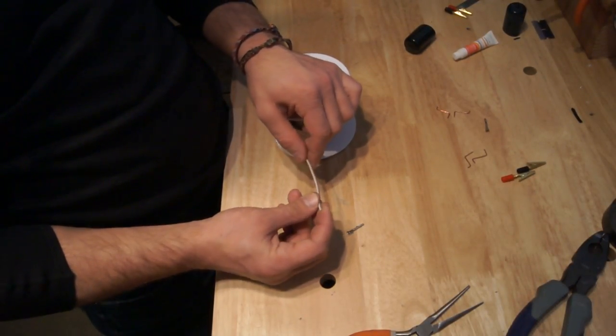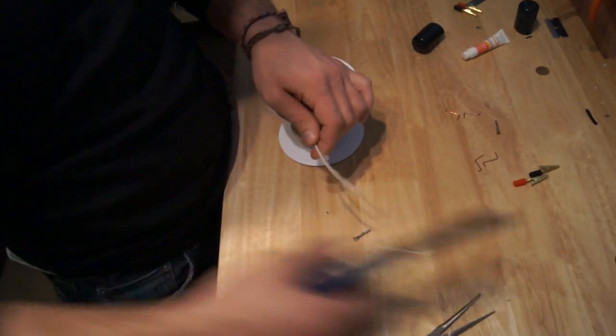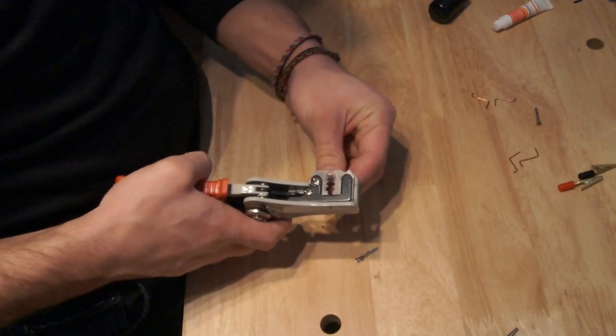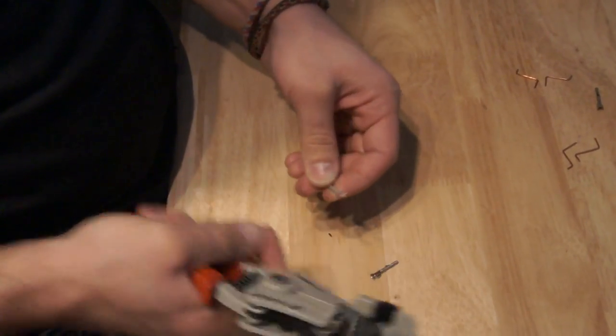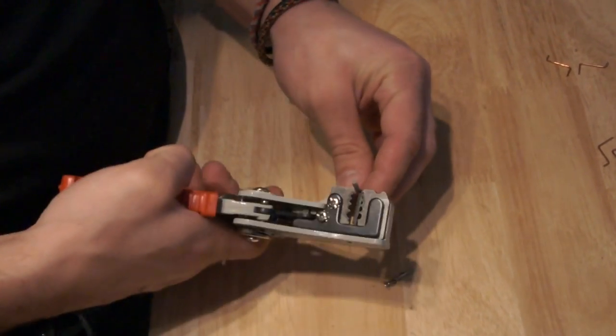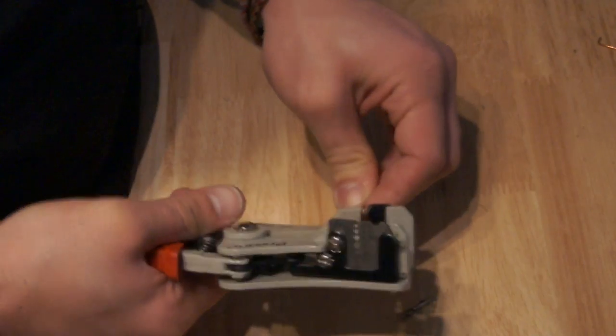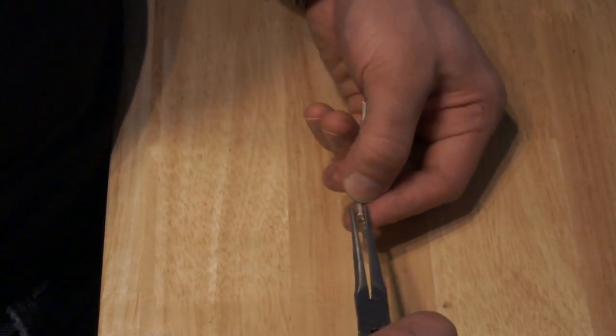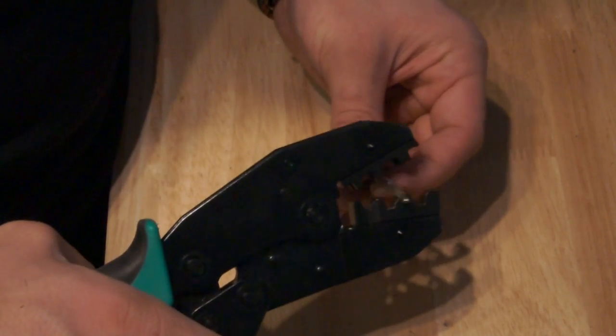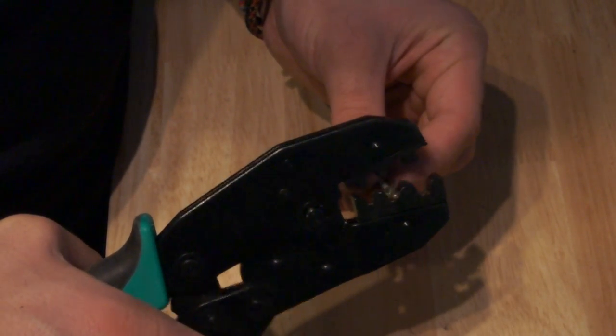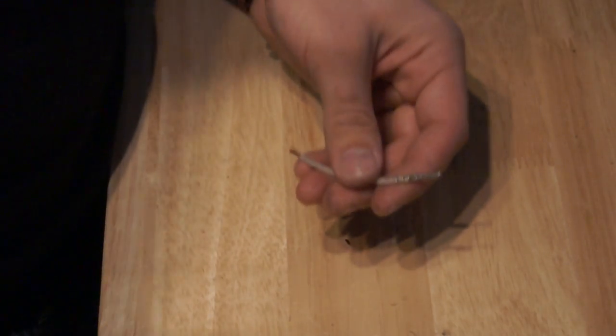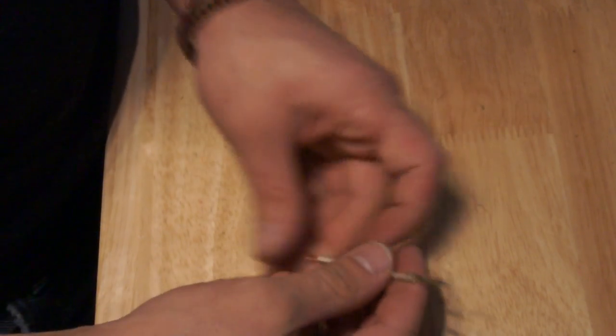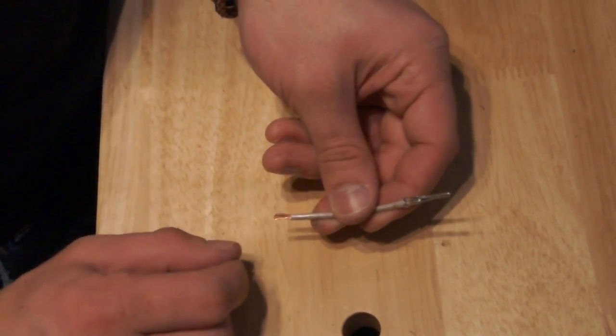Now I'll take an 18 gauge stranded wire and cut off about two to two and a half inches. And on one side, we're going to want to crimp on our male pin. So I'll strip about an eighth of an inch of wire. And on the other side, I want to strip about a half inch of wire. And this cable is going to go from the AML terminal to one of the voltage regulator terminals.